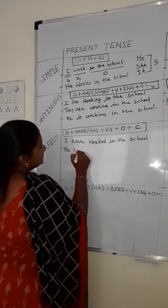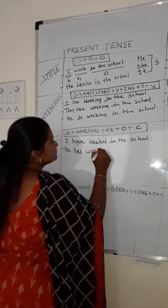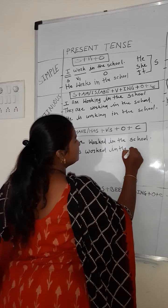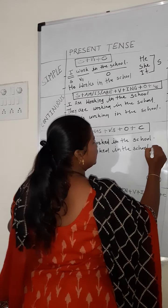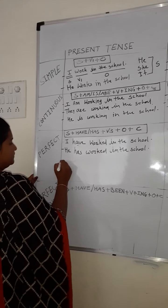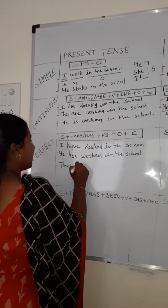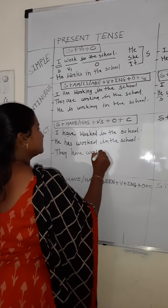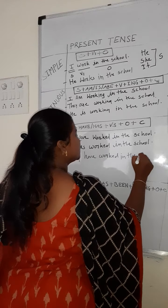So: 'He has worked in the school.' You can add the complement — since 2018 or whatever. If I use 'they' — plural form — then: 'They have worked in the school.'